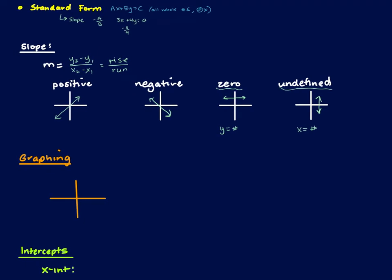For graphing, if we don't have it initially in slope-intercept form, we rearrange it. We use b to start on the y-axis. So if I had y equals 2/3 x minus 1, I would start at negative 1, go up 2 and to the right 3, or down 2 and to the left 3, depending on the graph. Then draw your line through those coordinates.